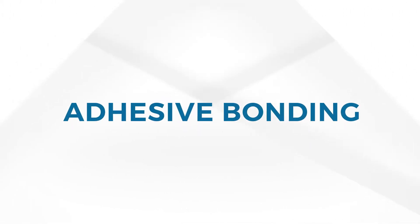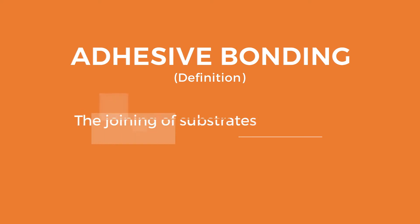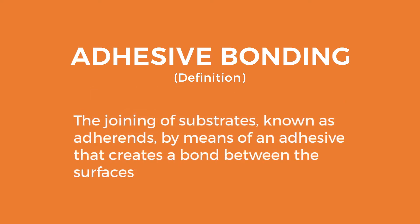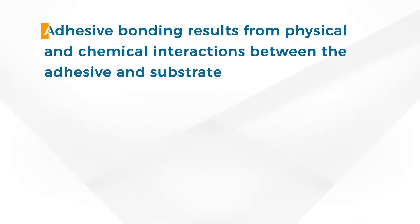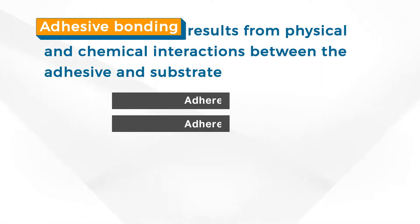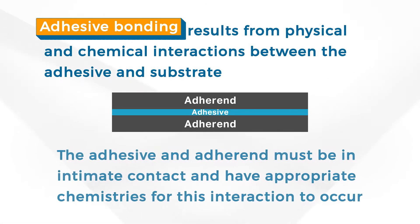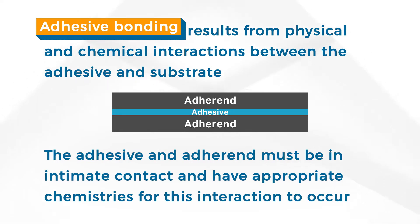Adhesive bonding is the joining of substrates, known as adherents, by means of an adhesive that creates a bond between the surfaces. Adhesive bonding results from physical and chemical interactions between the adhesive and substrate. The adhesive and adherent must be in intimate contact and have appropriate chemistries for this interaction to occur. This is controlled by the surface energies and chemistries of the adhesive and adherent.